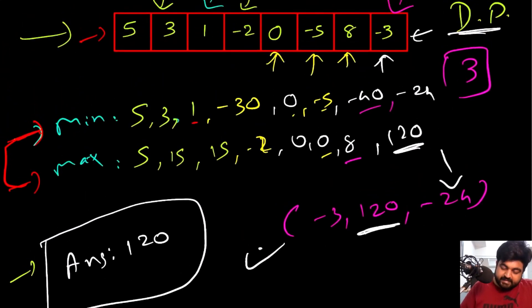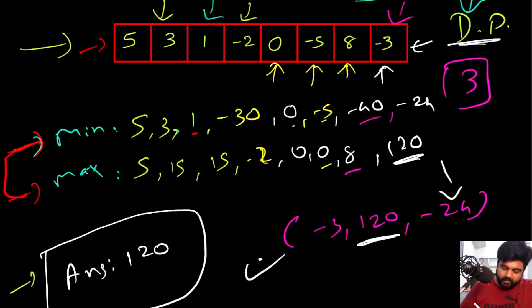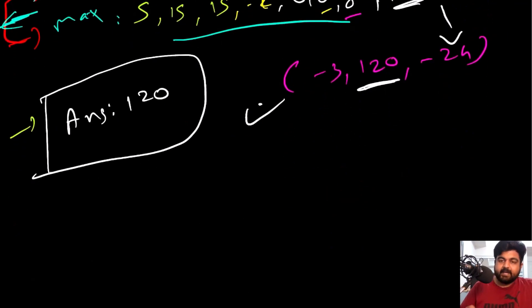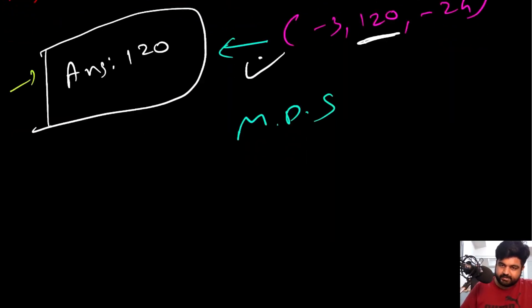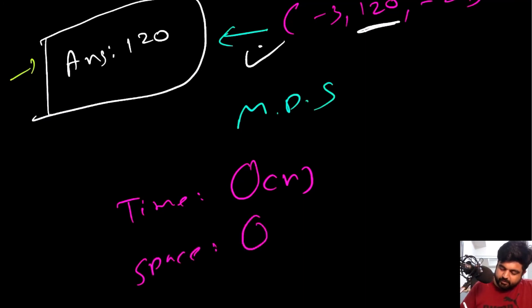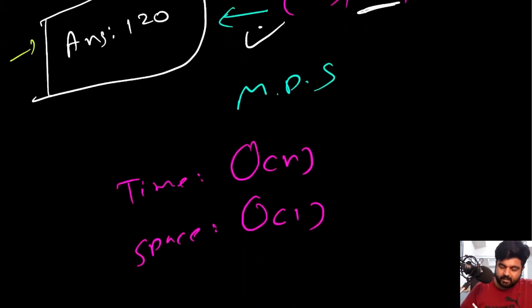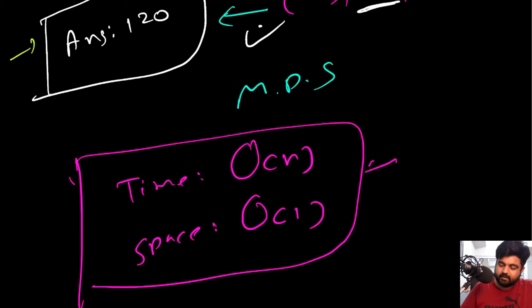By using dynamic programming, we complete everything in just one single iteration, storing only a couple of variables for previously calculated results. The time complexity is O(n) and the space complexity is O(1) — constant space — because we only store a few variables. This is a great improvement over the brute force approach that had O(n²) time complexity.